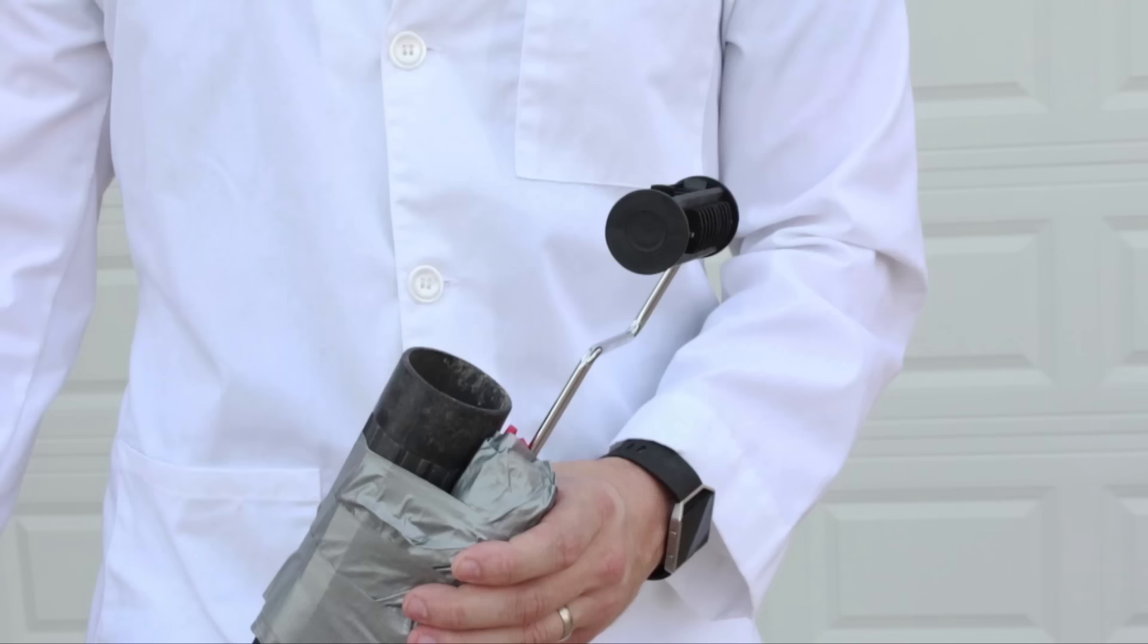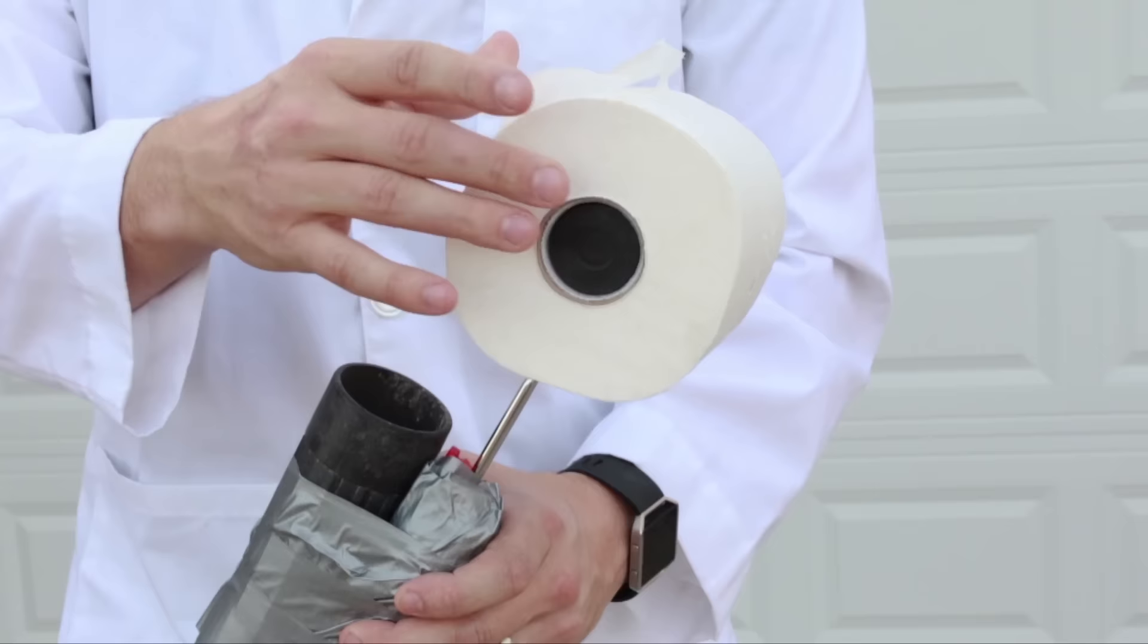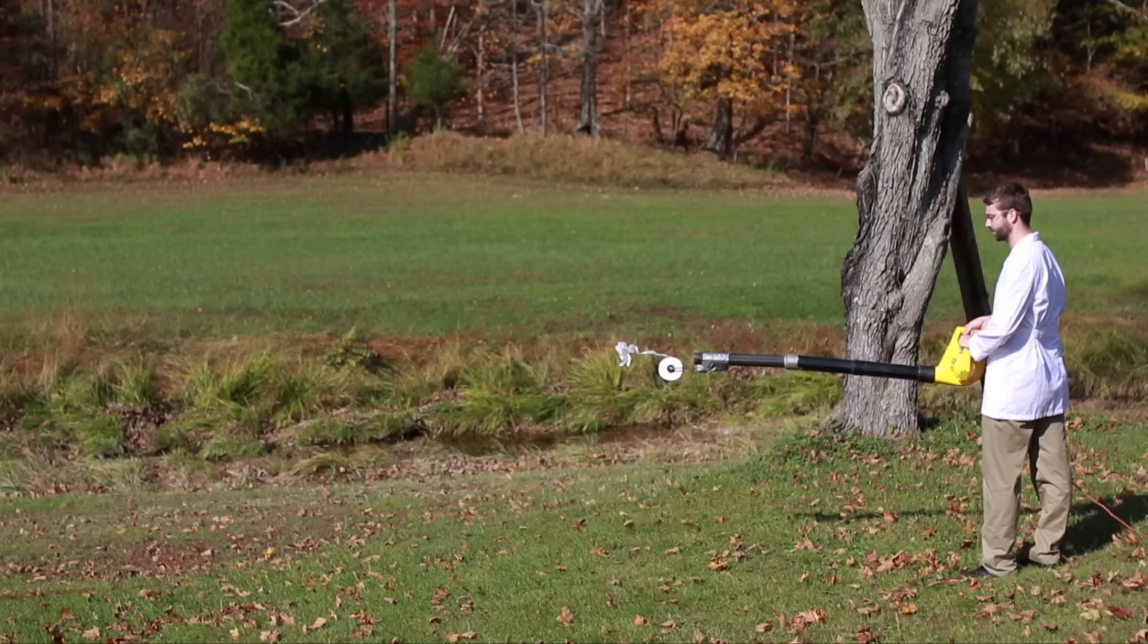Make sure as you load the toilet paper that it rests a couple inches below the stream of air and not right in front of it. At this point, your toilet paper shooter is ready to fire.